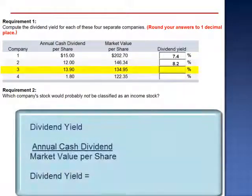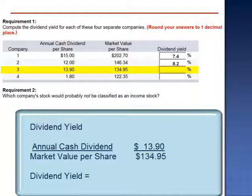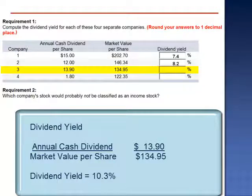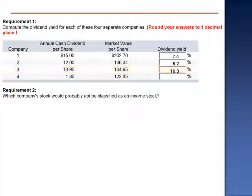Company 3: annual cash dividend of $13.90 divided by the market value per share of $134.95 is a dividend yield of 10.3%.